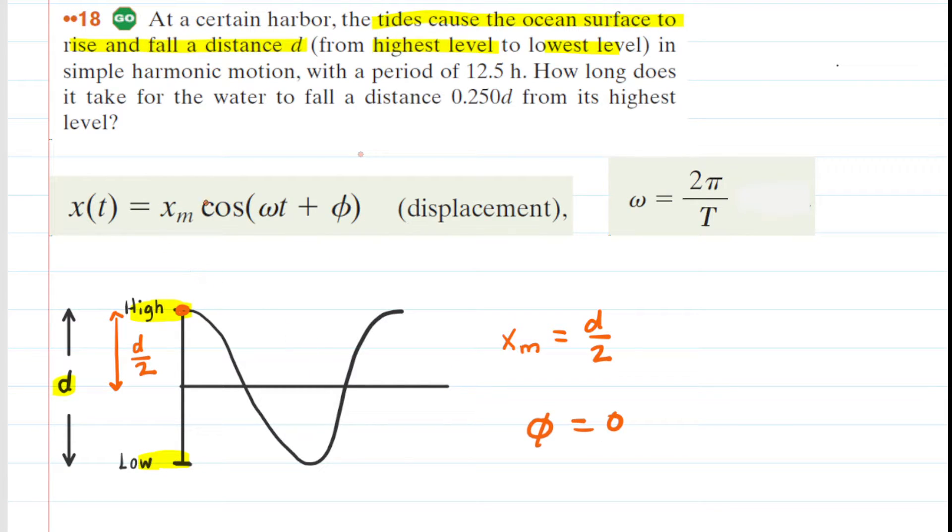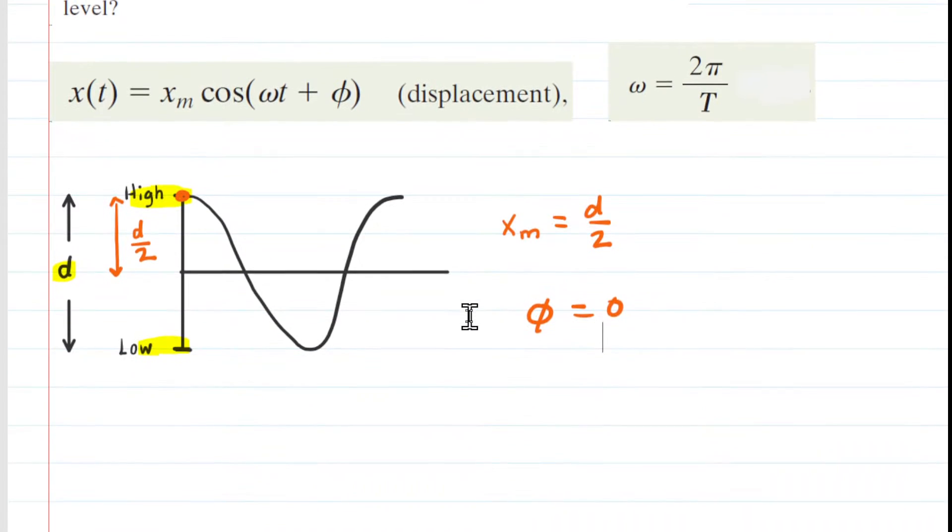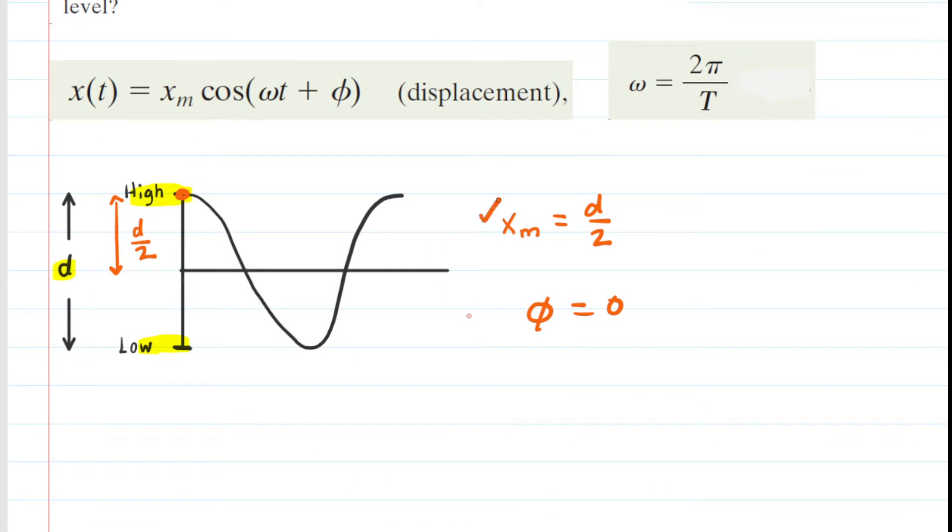So that's going to allow us to rewrite the displacement equation by subbing in d divided by 2 for xm and 0 for that phase angle. So let's go ahead and do that.